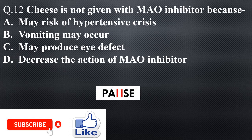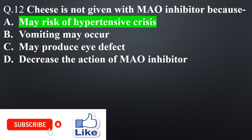Question 12. Cheese is not given with MAO inhibitors because: Option A: May risk of hypertensive crisis, Option B: Vomiting may occur, Option C: May produce eye defect, Option D: Decrease the action of MAO inhibitor. The right answer is Option A: May risk of hypertensive crisis.